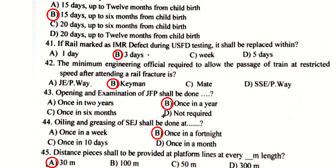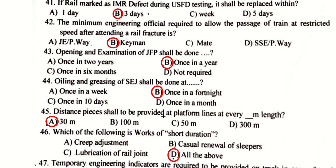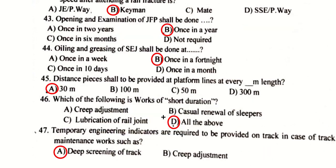If a rail is marked as an IMR defect during ultrasonic testing, it shall be replaced within three days. The minimum engineering official required to allow passage of a train at restricted speed after attending a rail fracture is a keyman. Opening examination of a fish plate shall be done once in a year, while greasing of a CJ shall be done once in a fortnight.